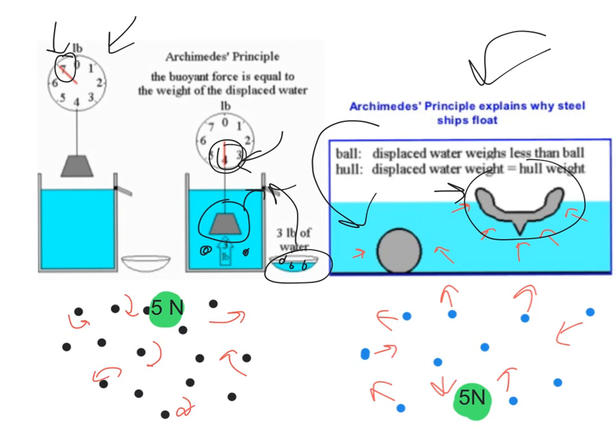So as a result, the water that gets pushed out of the way is much greater, so the buoyant force is much greater on this object than it is on this one. And that's Archimedes' principle and the buoyant force. See you guys in class!